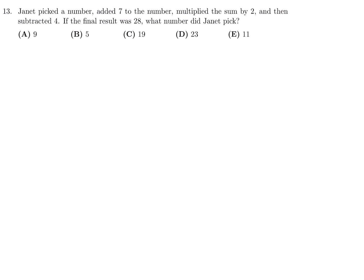Janet picked a number, added 7 to the number, multiplied the sum by 2, and then subtracted 4. If the final result was 28, what number did Janet pick? Let's say her number is X. You first add 7, then multiply by 2, then subtract 4, and that result is 28. So 2X plus 14 minus 4 is equal to 28. So that means 2X is equal to 28 minus 10. 2X is 18, and therefore X is equal to 9. So number 13, the answer is A.